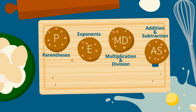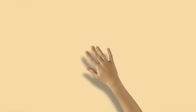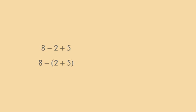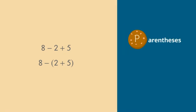Let's evaluate some expressions. We'll start with an easy one — you'll see that following PEMDAS will always lead us to the right answer. Let's look at two similar expressions: 8 minus 2 plus 5, and 8 minus (2 plus 5). The only difference between them is the use of parentheses. The first expression only has addition and subtraction, so you should perform the operations in order from left to right.